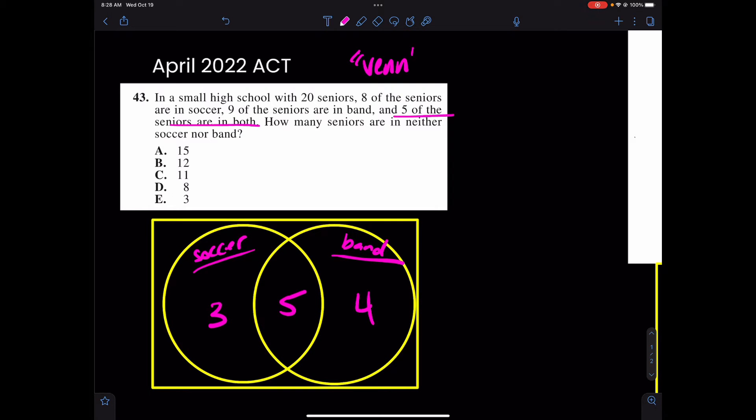From there, understand that we have three plus five plus four, which adds up to 12. Again, three plus five plus four equals 12. Therefore, it says 20 seniors total. What's 20 minus 12? I'm getting eight. The answer, my friends, is eight. Really, eight should be in this space outside of the Venn diagram.